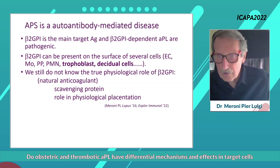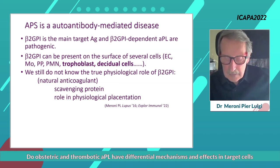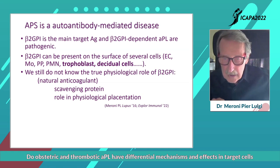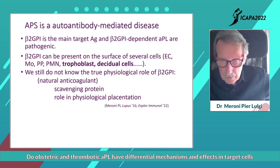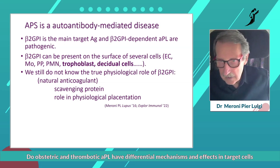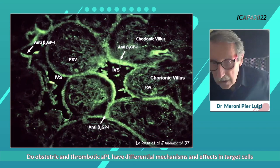We still don't know exactly the true physiological role of beta-2-glycoprotein-1. At first it was thought to be a natural anticoagulant, but it is becoming more popular that beta-2-glycoprotein-1 is one of several scavenging proteins in our body. Data from knockout animals from the CREDIUS group suggest that beta-2-glycoprotein-1 could play a role in physiological placentation, focusing attention on its importance in placenta tissues.